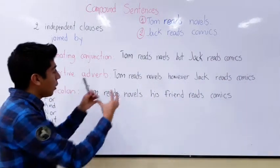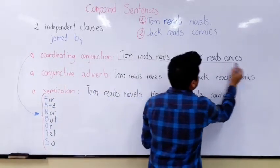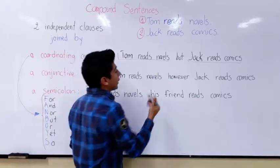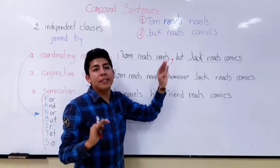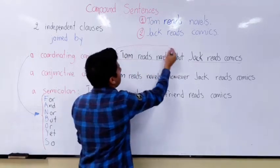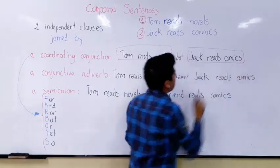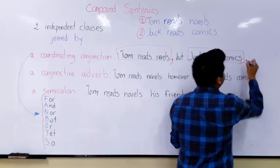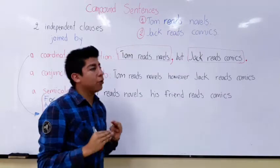I put them together: my first independent clause, the FANBOY, and my second independent clause. The punctuation rule tells us that we need a comma before the FANBOY — this is mandatory. So: 'Tom reads novels' [first independent clause], comma, 'but' [FANBOY], 'Jack reads comics' [second independent clause], and I finish the sentence with a period. This is a compound sentence.